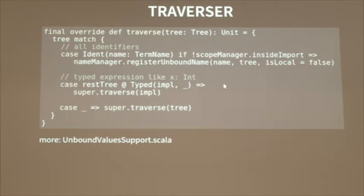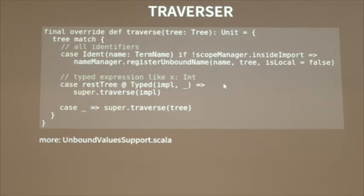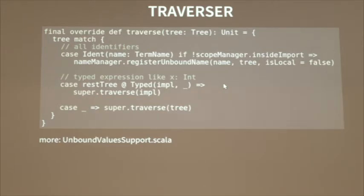We have to find all closure parameters and decide if it's a valid closure or a compilation error, and then inject those values into the created lambda. When working with this we start working with Scala AST — we take the expression, parse it, and play with the AST. The first tool we use is the tree traverser concept: it traverses through all tree nodes and we can decide if we want to take action on a given node. This is part of the unbound value support that searches for closure parameters. For example, for an identifier like 'list' in 'list.toString', we can decide if we want to register it as unbound or not.